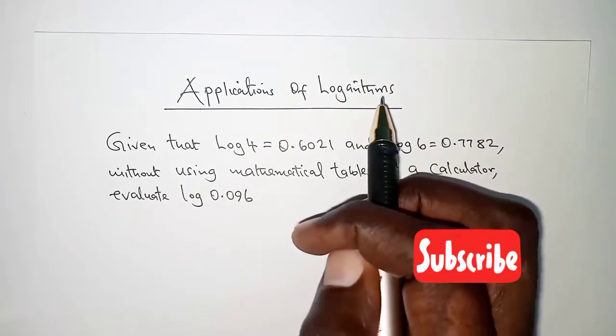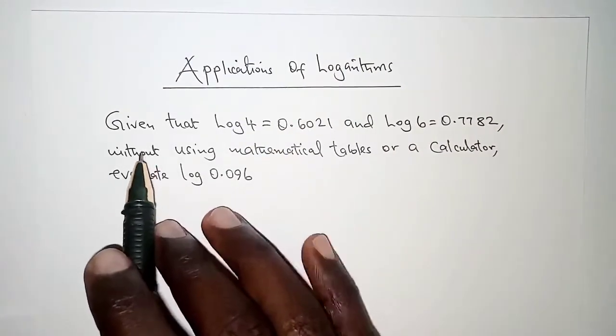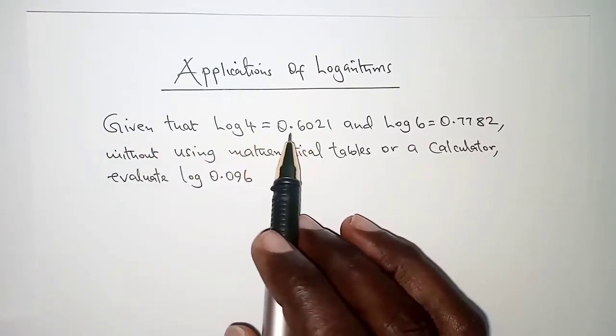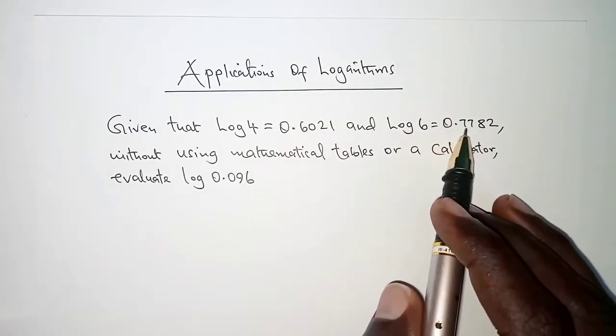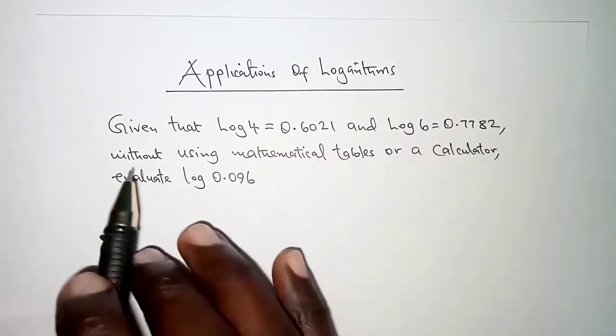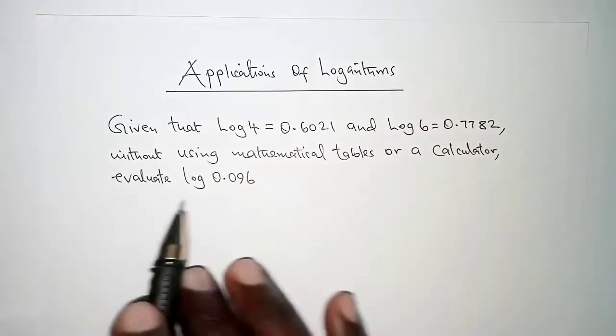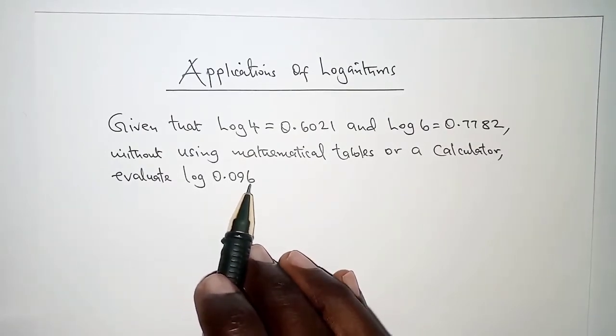The type of question we have today reads: given that log 4 = 0.6021 and log 6 = 0.7782, without using mathematical tables or a calculator, evaluate log 0.096.